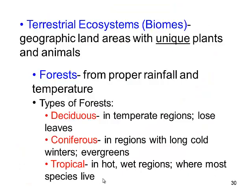A lot of it has to do with elevation — elevation away from sea level. So, terrestrial ecosystems, biomes, are geographic land areas with unique plants and animals.